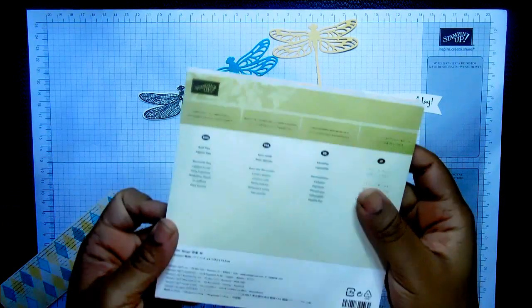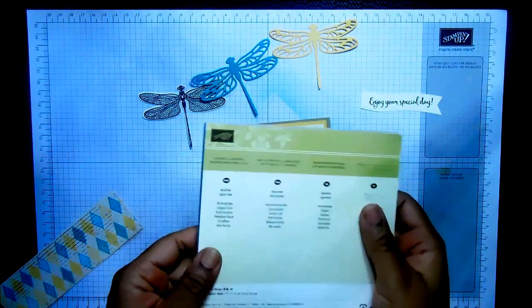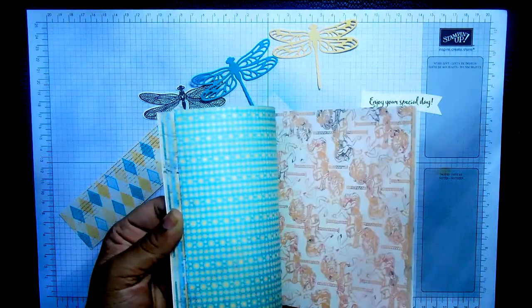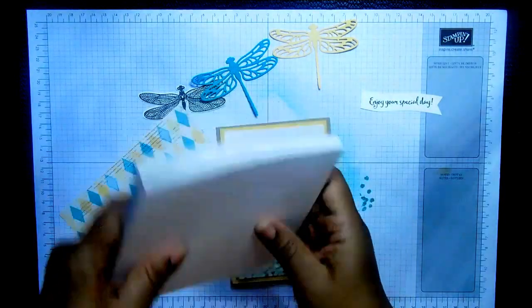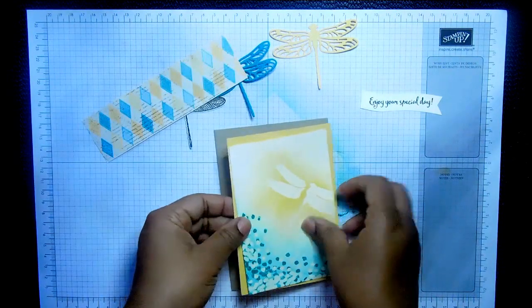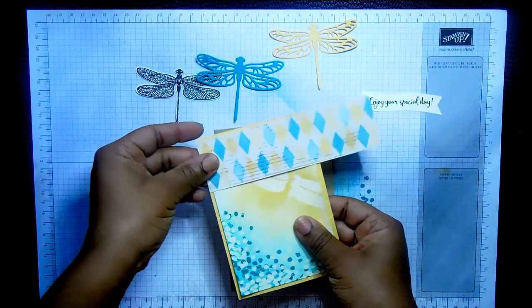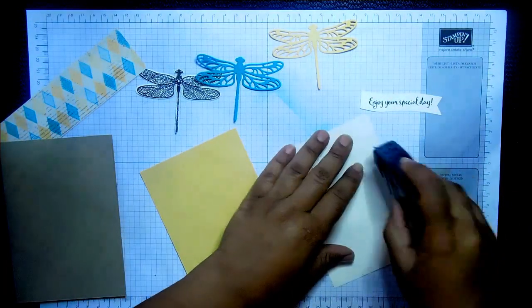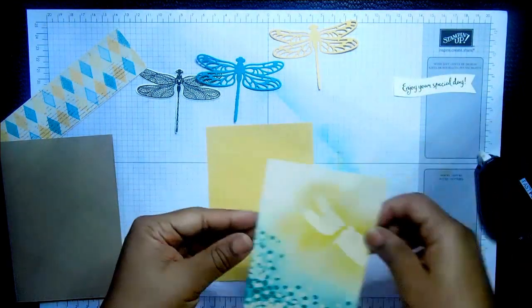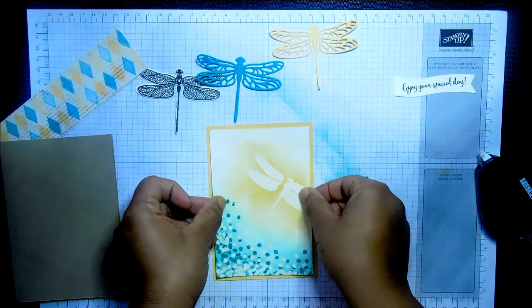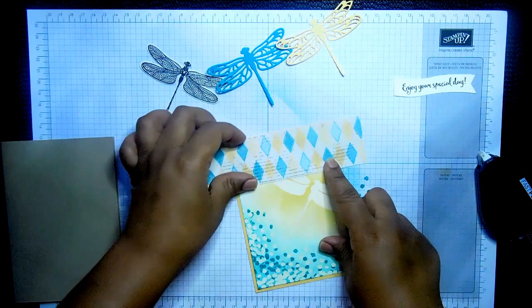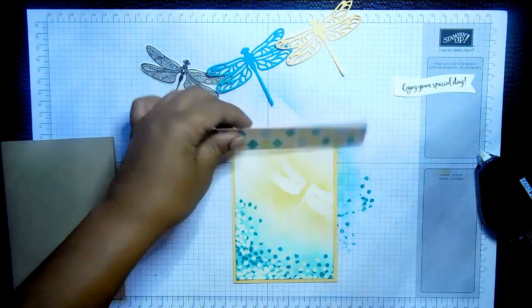And I've got a piece of the new Cupcakes and Carousels Designer Series Paper. It is absolutely amazing. I love, love, love this paper pack. It's so pretty. And lots of ideas that I can do with that. But I've got a strip of it here. And I'm going to stick this at the top. And I'm just deciding now whether or not to take it right across. Yeah. That's what I'll do. I'm going to stick this down with some Fast Fuse. My favourite adhesive. You can use whatever adhesive you like. Like that.